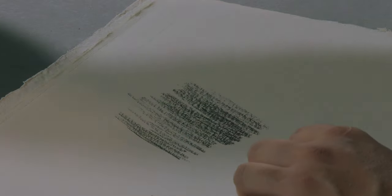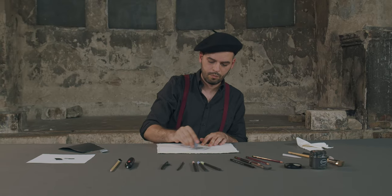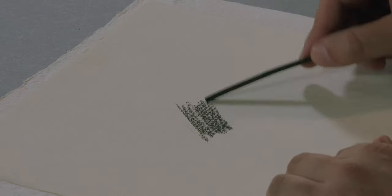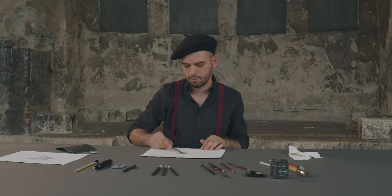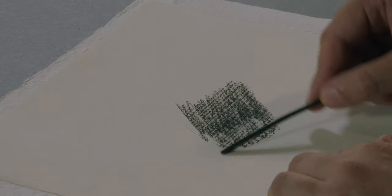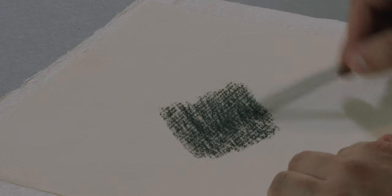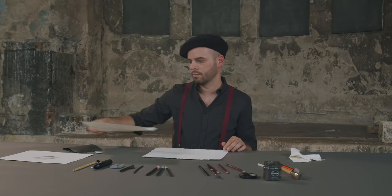For a traditional looking paper, Fabriano Artistico is great for charcoal, as it is very strong and work can be easily erased. Another great paper is Strathmore 500 charcoal, because of its beautiful laid texture, very close to Ingres papers, similar to the texture of most of the sheets sold in the 19th century.